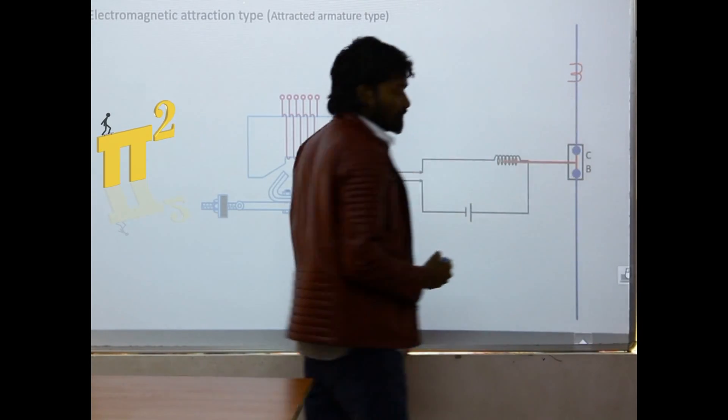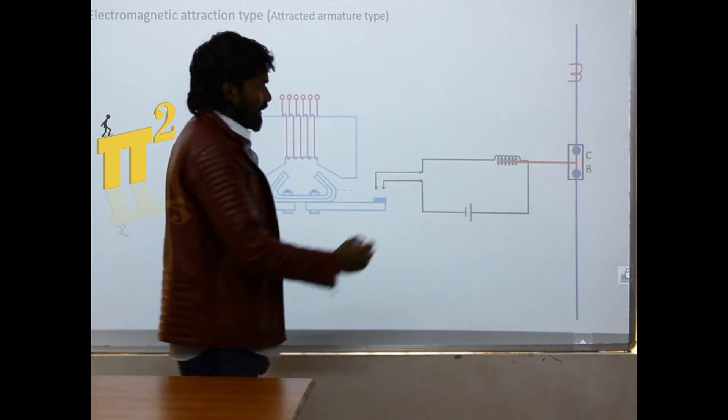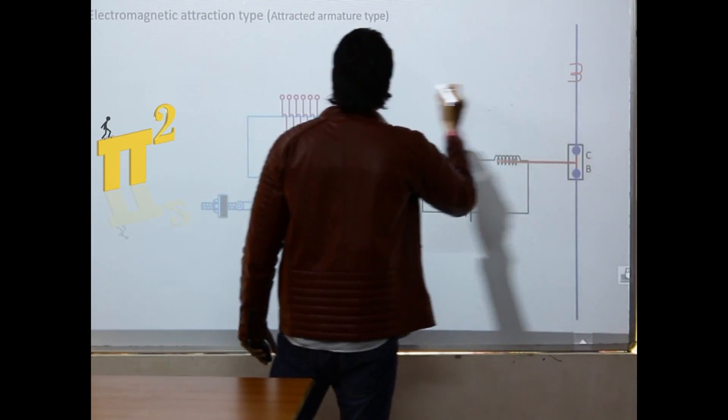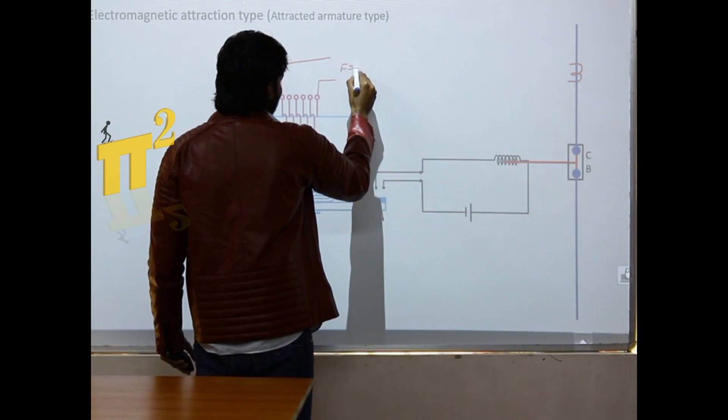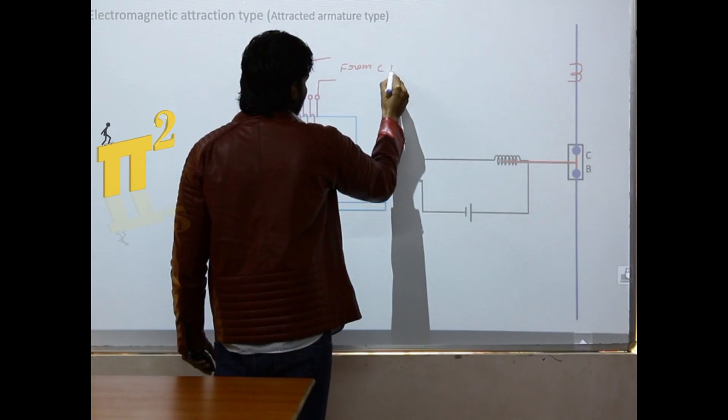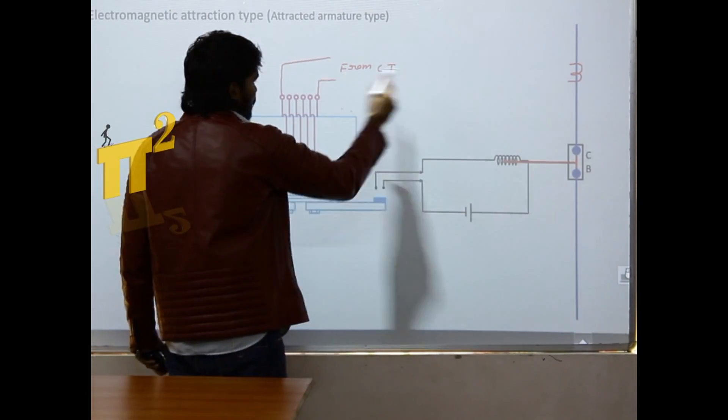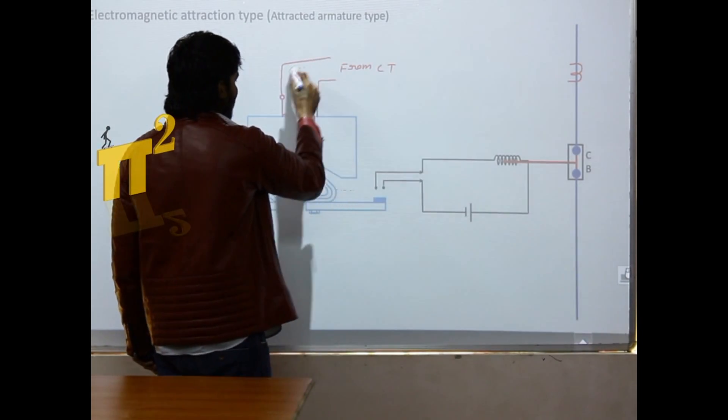The secondary of the current transformer is connected to these two terminals. They are connected from the CT. These two terminals are fed.